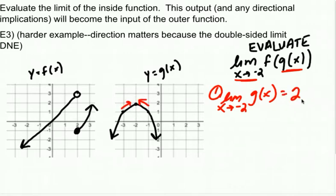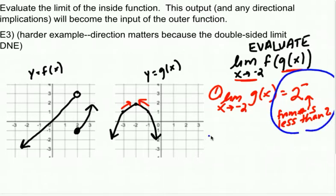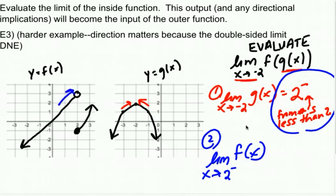But what I want you to notice is it's a 2 from the left, because it's a 2 from the numbers less than 2. Like both of these arrows are approaching from the bottom and coming up to the top. So that output is going to become my new input. So the limit as x approaches 2 from the left of f(x). Well, that means that my answer is a 3.